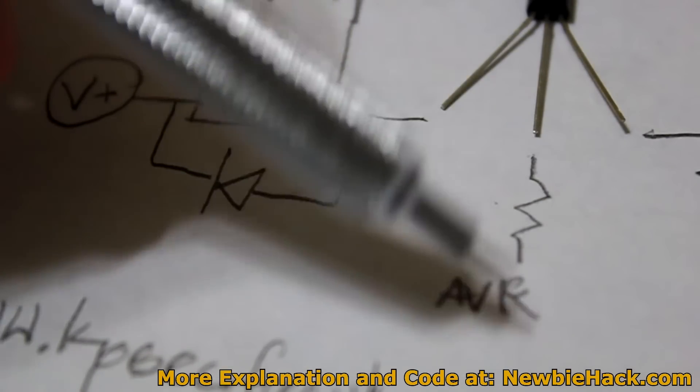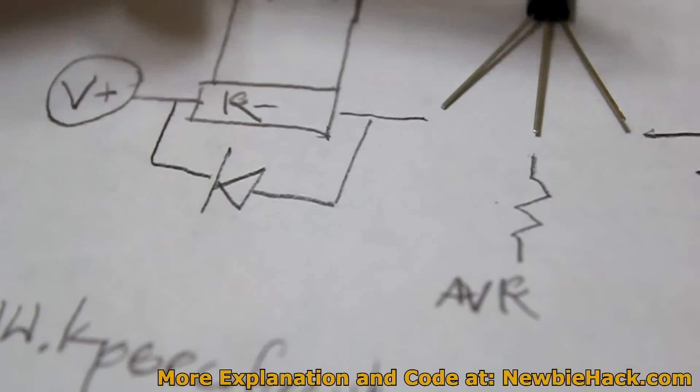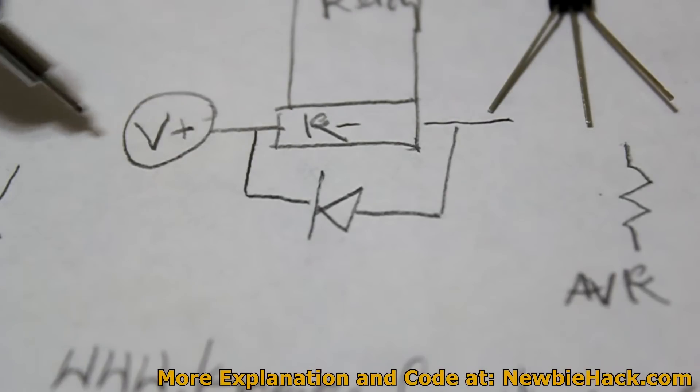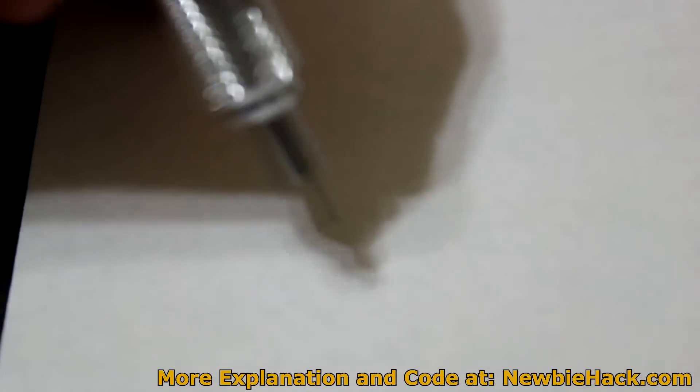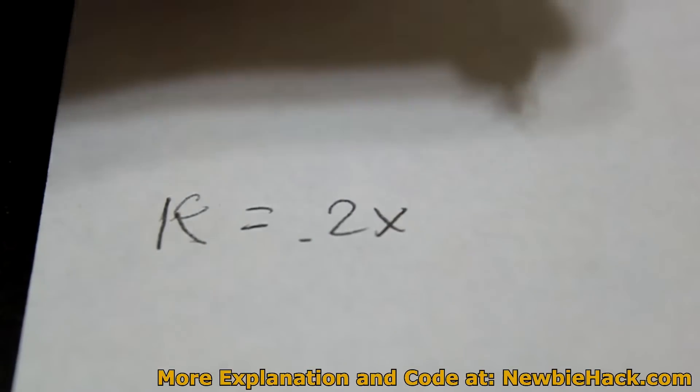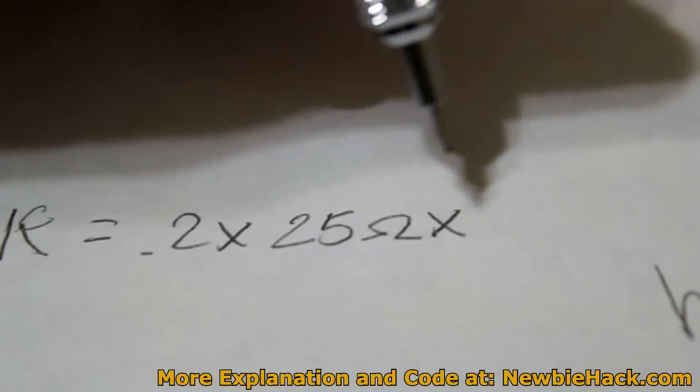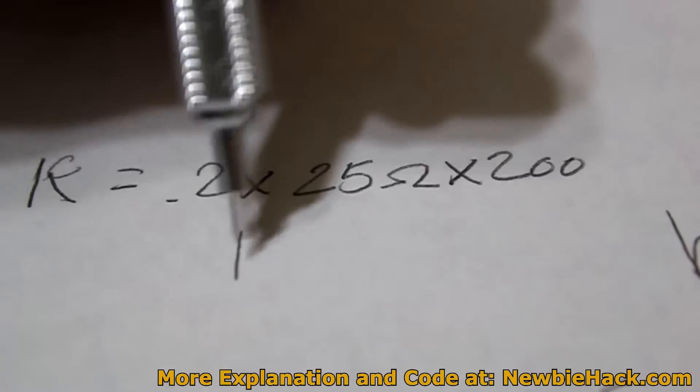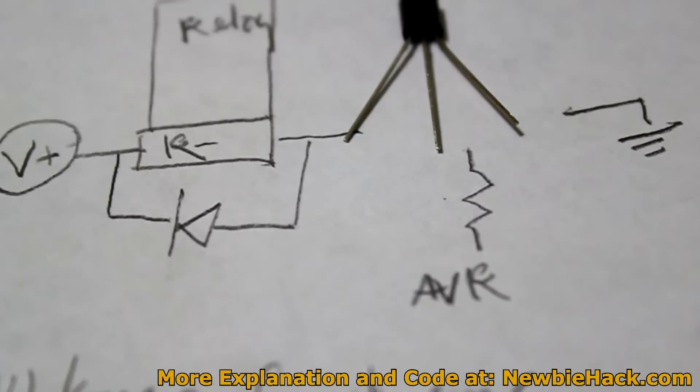Now we need to determine the resistance value coming from the pin of the AVR to the base pin of the transistor. If the voltage from the AVR is the same as the voltage source for going across the collector and emitter, then we can use a simple formula of the resistance equals 0.2 times the load resistance, which is 25 ohms, times the HFE of your transistor, which is 200. And this equals exactly 1000 ohms or 1k. So we will use a 1k resistor here.